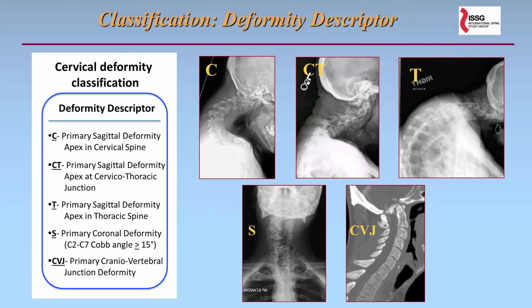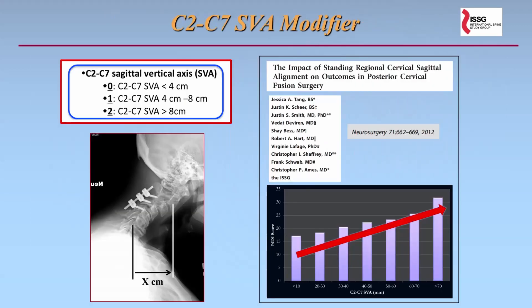This is the classification that we published. It includes a simple deformity descriptor and five modifiers. The cervical deformity descriptor includes C, CT, and T for the kyphoses that have apex in the mid-cervical, cervicothoracic junction, and thoracic spine respectively. S reflects those with a primary scoliosis, and CVJ is for primary craniovertebral junction deformities. The first modifier was the C2 to C7 sagittal vertical axis, or SVA, one of the few parameters that actually had literature to support it. In a study led by Chris Ames, we showed a linear correlation of NDI — neck disability index — and the C2 to C7 SVA.